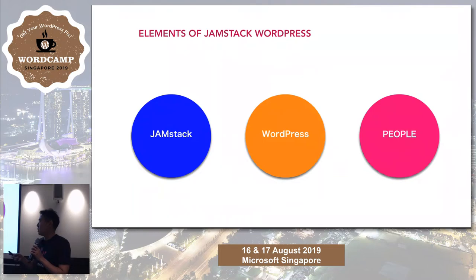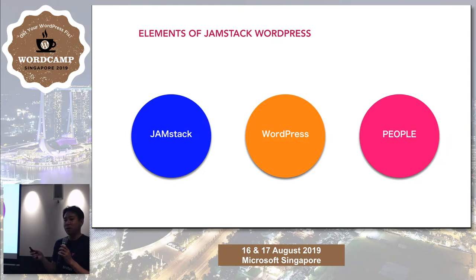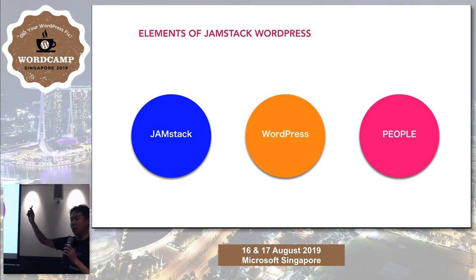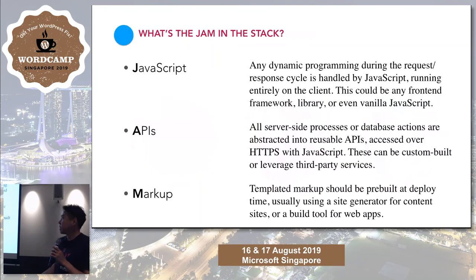When using JAMstack with WordPress, there are three elements: JAMstack — a new architecture for web developers — on the left side; the people who publish articles on the right side; and in the middle, WordPress, which connects JAMstack and the people. So let's dig a little deeper into these elements.